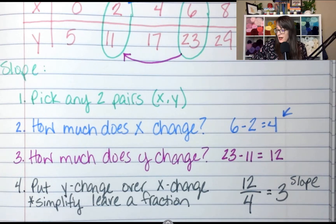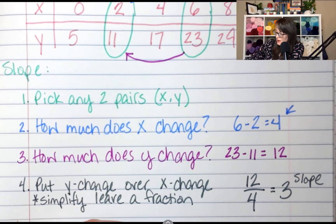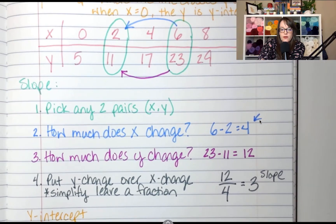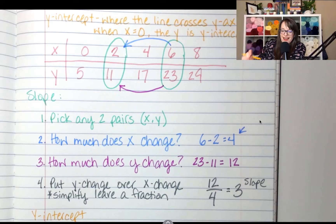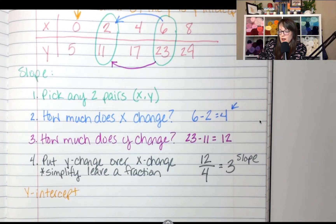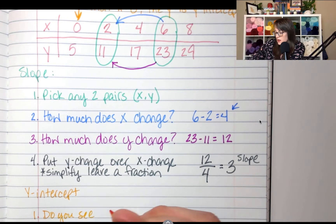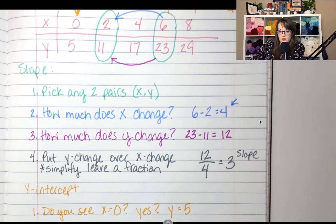Next, I need to look at the y-intercept. The y-intercept — remember, it's when x is 0. Do you see in the table where x is 0? Yes, x is 0 right here. So the cool thing about y-intercept: if x is 0, that value is the y-intercept. Step one: do you see x equals 0? Yes — then the y-intercept is 5. So for this one, the y-intercept is 5.